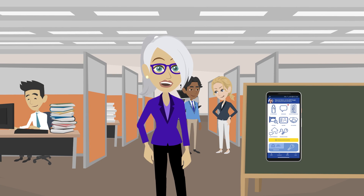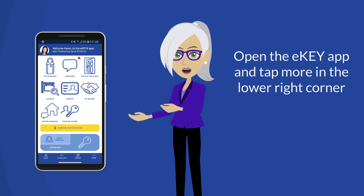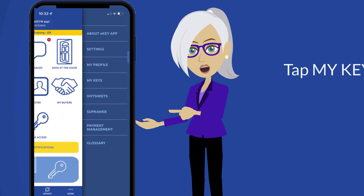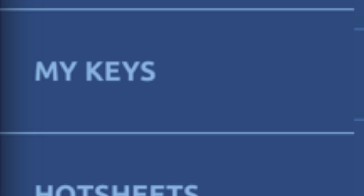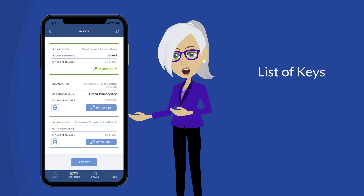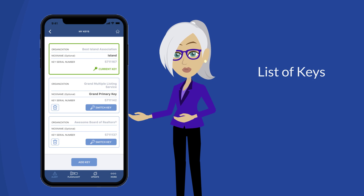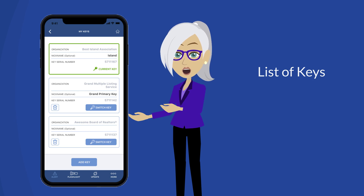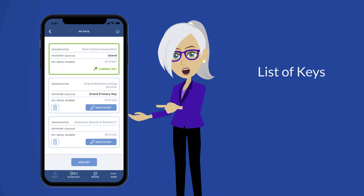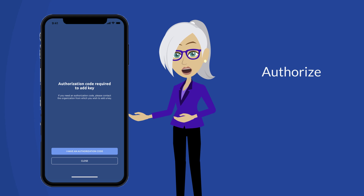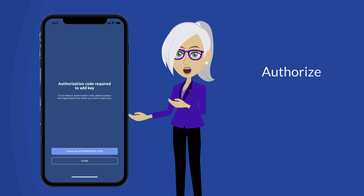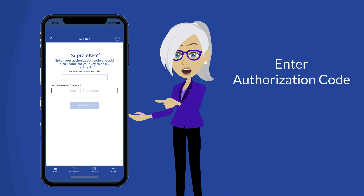Just follow these steps: open the eKey app and tap 'More' in the lower right corner, then tap 'My Keys.' This will bring up a list of your keys — the current key will appear at the top, bordered in green. To add a key, tap 'Add Key.' A screen will appear indicating that you need an authorization code to continue.